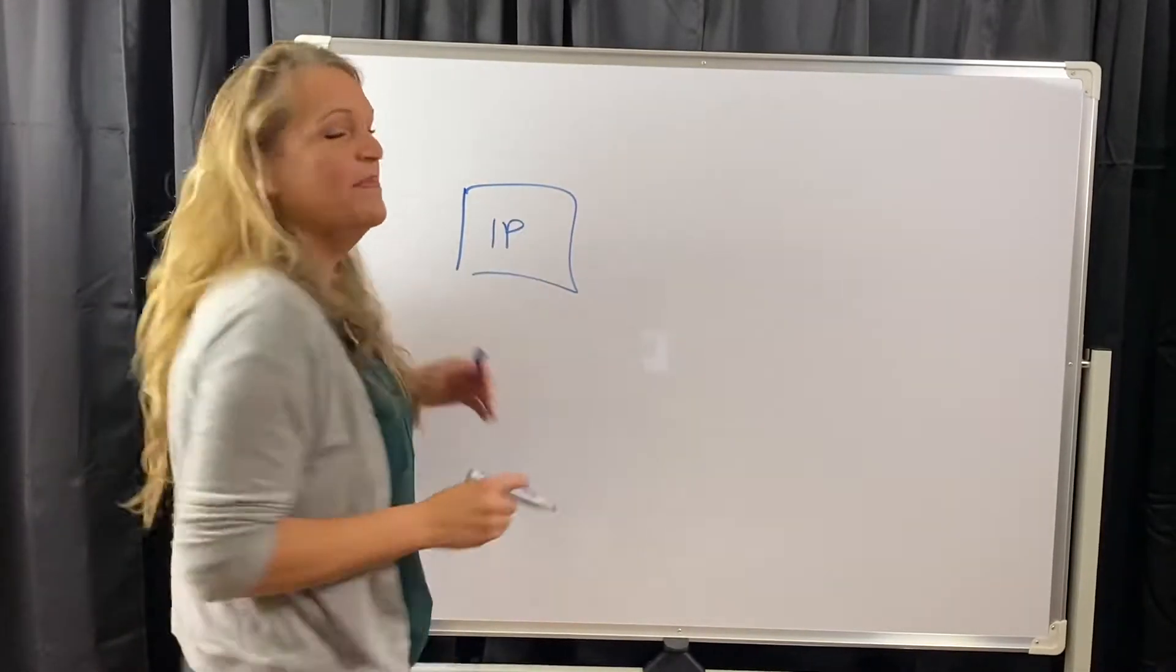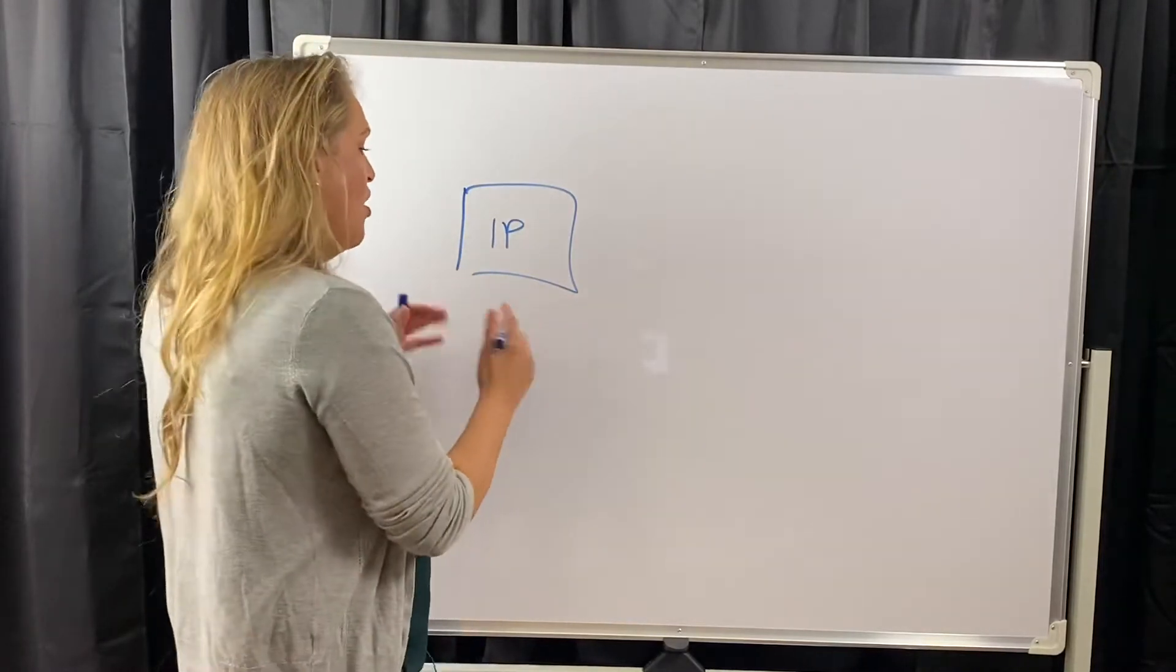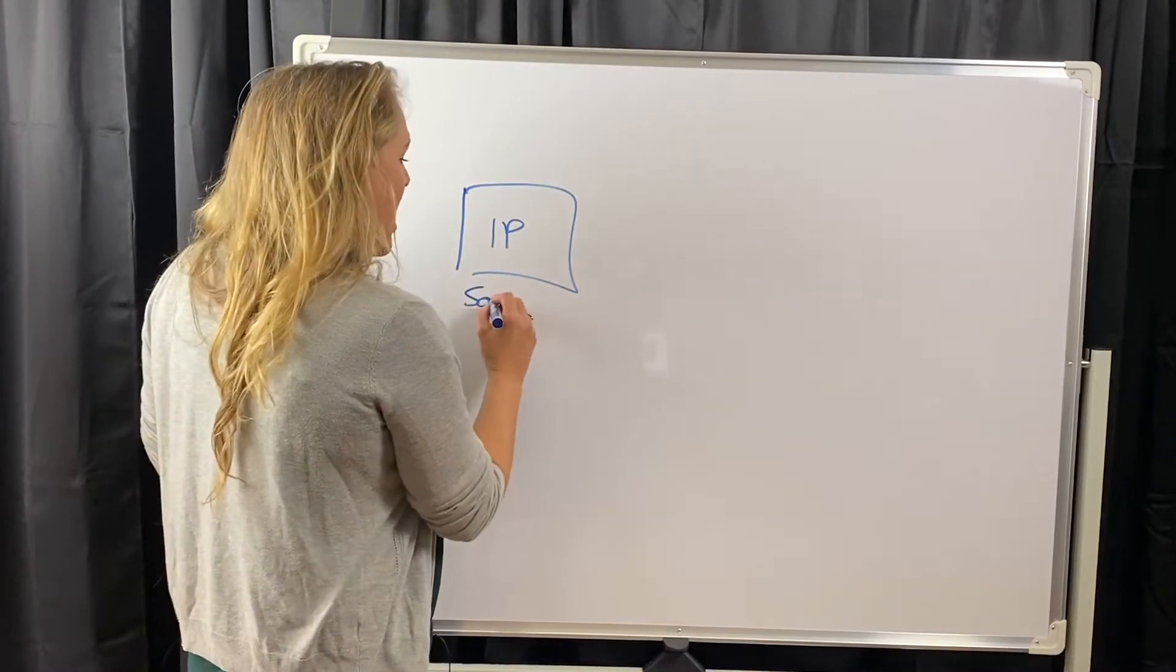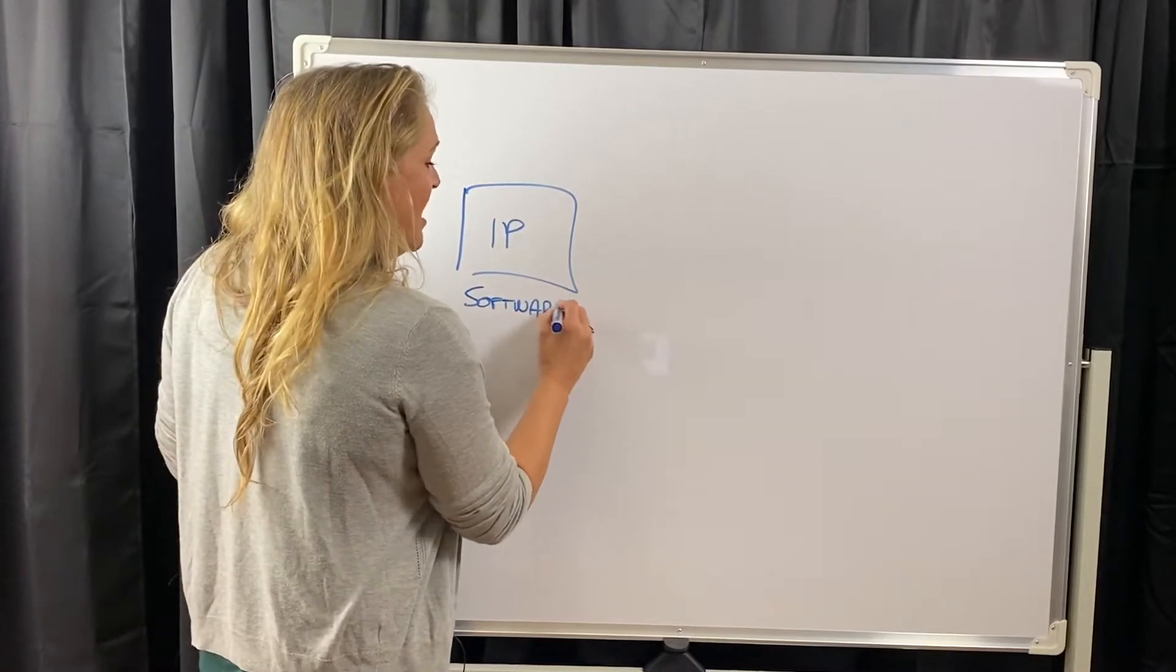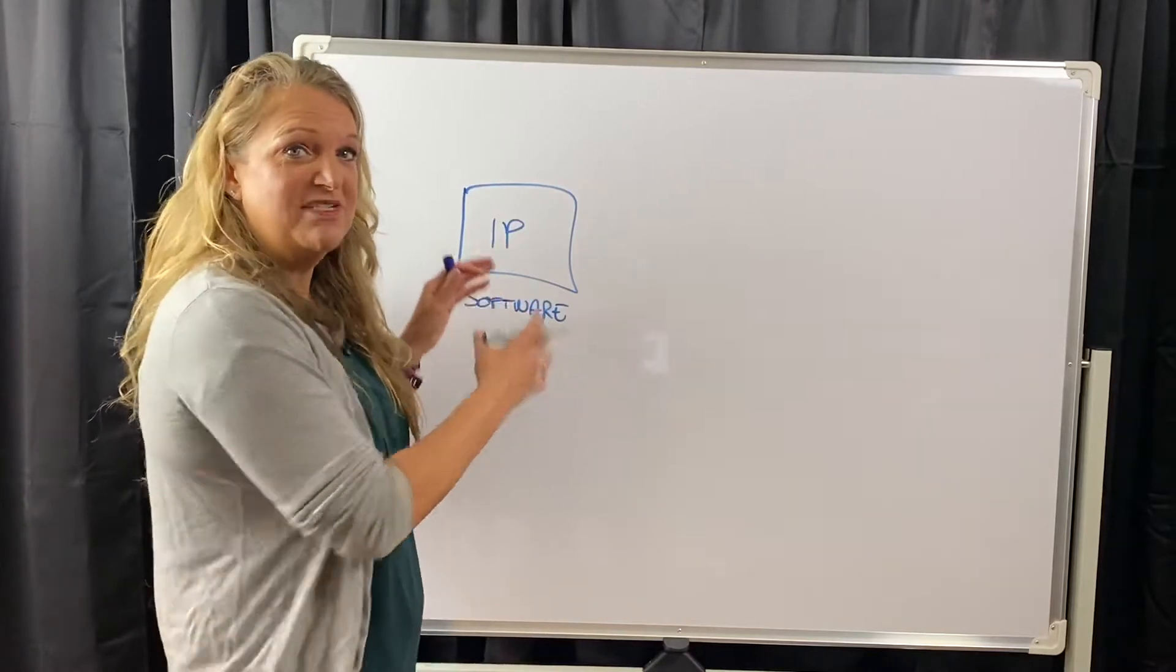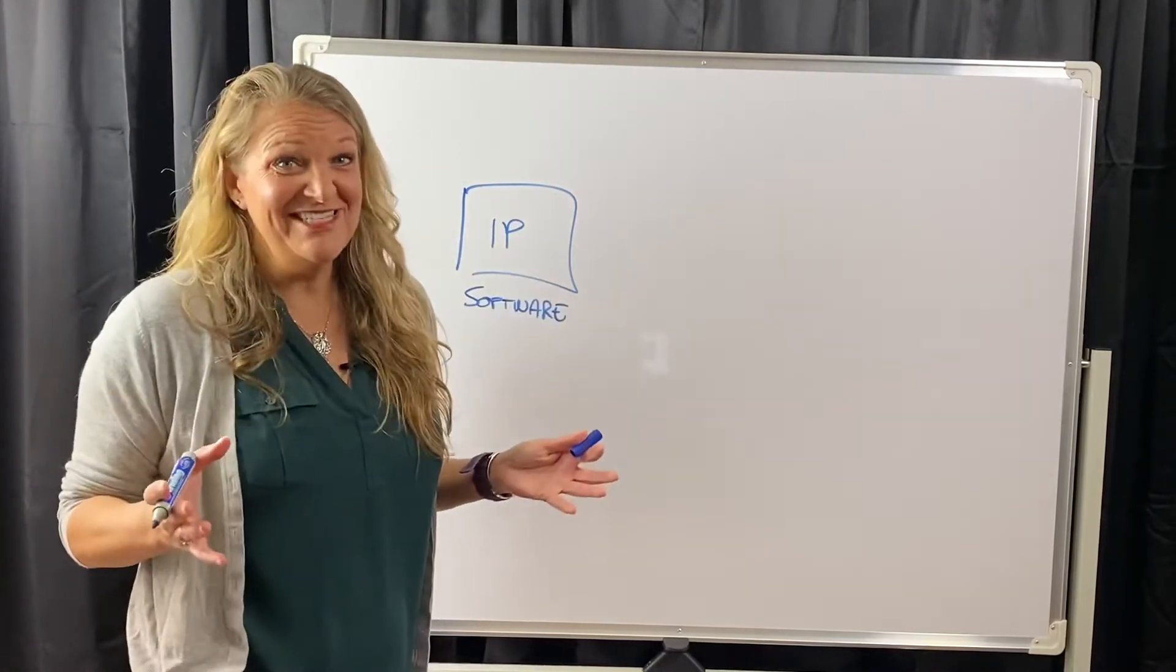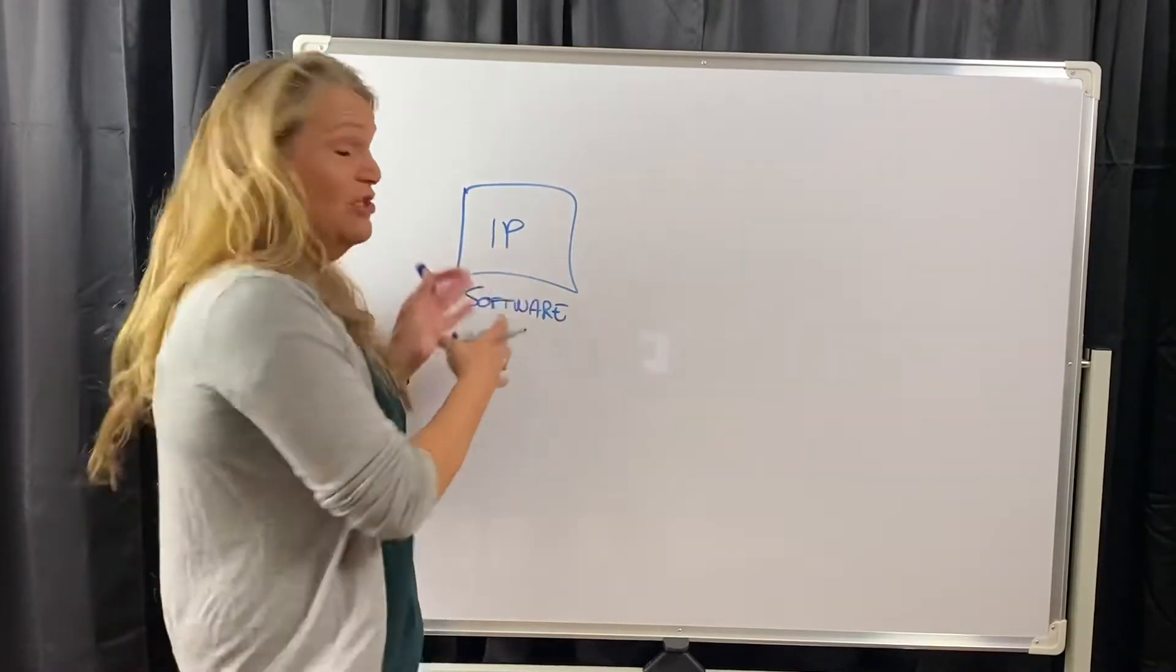So my IP company may be a separate legal entity that I put all of my software and maybe any intellectual property that I have. The reason why you want to put this as an asset into a separate organization is if something happens and you get sued, you don't want to lose this too.